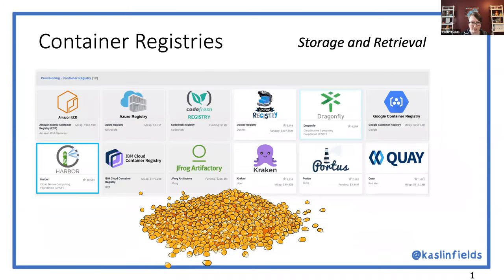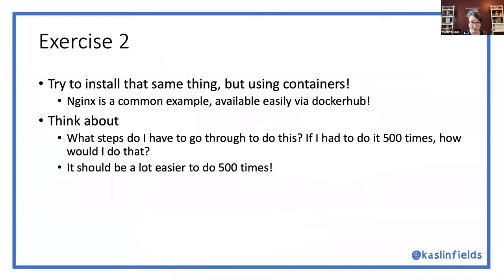Next are container registries. Many people have heard of Docker Hub. If you want to run your own registry, Harbor is a CNCF project in this space. A container registry is where you store the container image so you can spin it up on different machines — it's about storage and retrieval. For an exercise, try installing an application like Nginx using its Docker Hub image; it's one command, spins up super fast, and think about how easy it would be to do that 500 times.